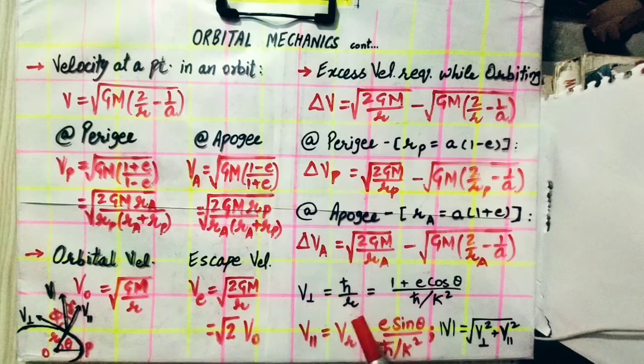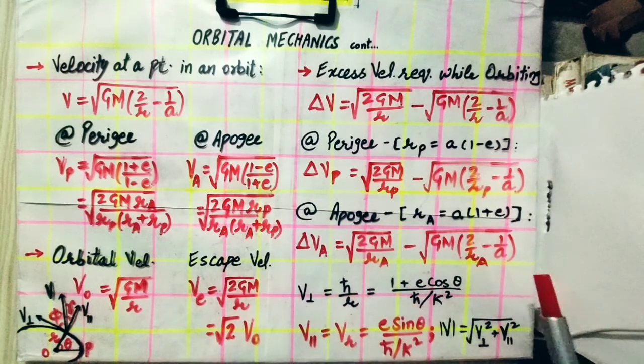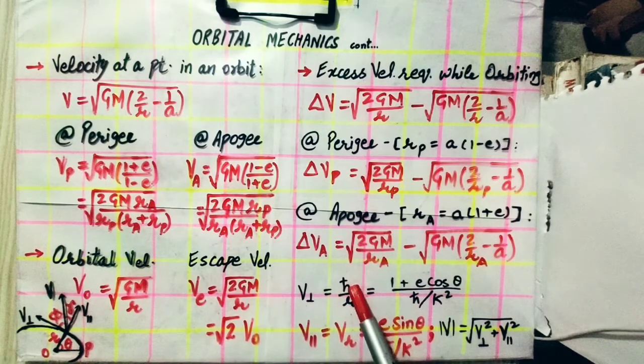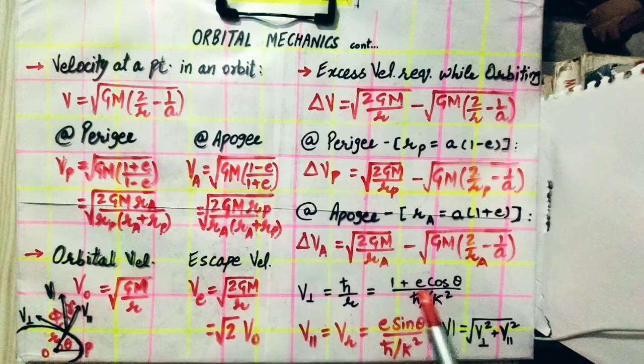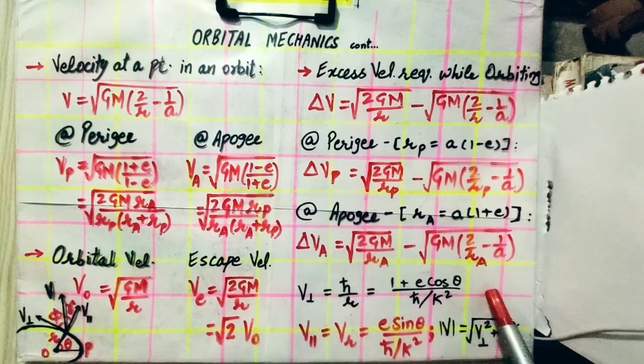For a circular orbit, we know r v sin theta, and radial vector and velocity vector will be perpendicular. So theta, or sin theta r cross v sin theta, that is theta equals 90 degrees. Sin 90 is 1. So v and r sin 90, or v r, equals h, which is also equal to 1 plus e cos theta upon h by k square. So v perpendicular in terms of eccentricity can be calculated by this.